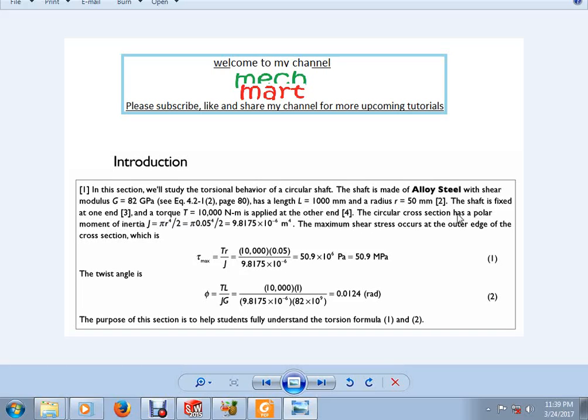The circular shaft has a polar moment of inertia J and the maximum shear stress occurs at the outer edge of the cross section. The cross section can be calculated from tau max equals T times r over J. So, putting this value, we can insert the maximum shear stress, that is 50.9 MPa.